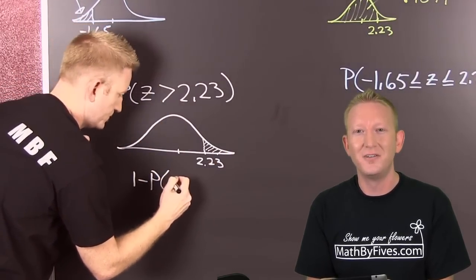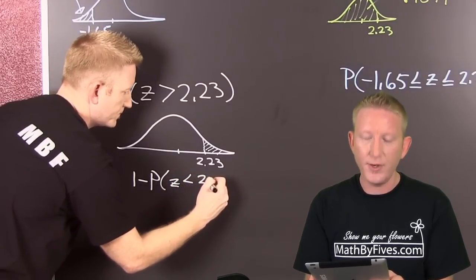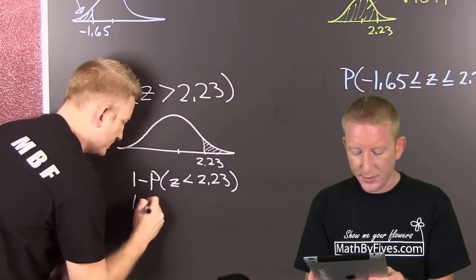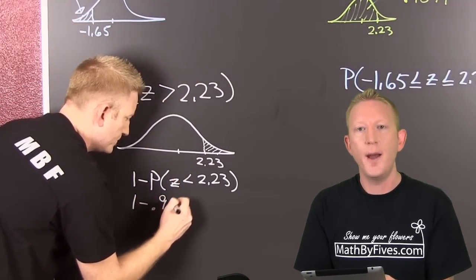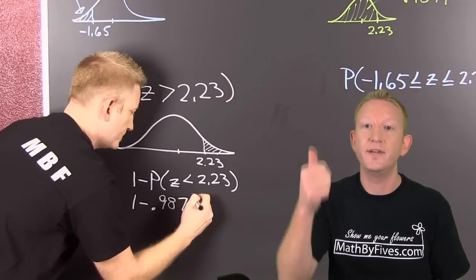So we're going to use subtraction. And that's why when we're looking for the probability that a value is going to be greater than 2.23, we look up 2.23 and we do 1 minus that value, because the area underneath the entire normal curve is 1.